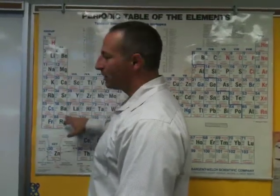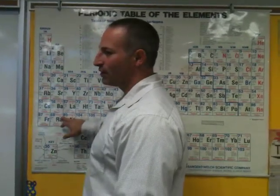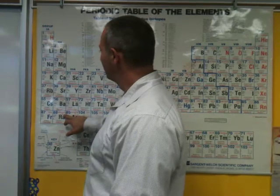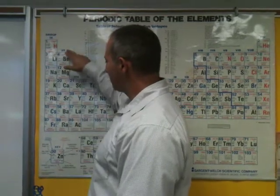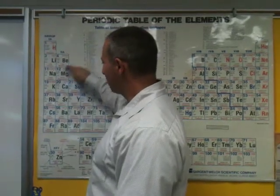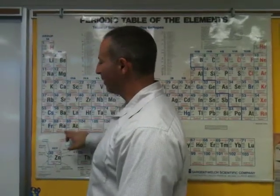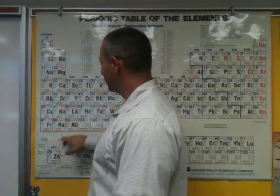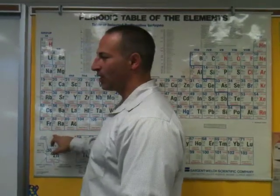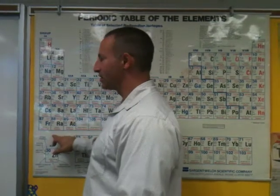Group 2 are the alkaline earth metals. They can be memorized by saying Be-Mg-Ca-Sr-Ba-Ra, and they will form +2 ions.